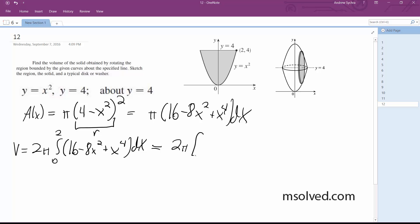2 pi times 16x minus eight-thirds x cubed plus one-fifth x to the fifth from 0 to 2. Okay, and what we get is 2 pi times 32 minus 64 over 3 plus 32 over 5.